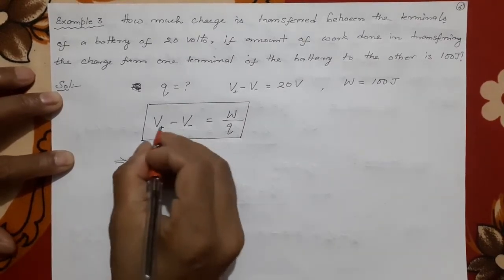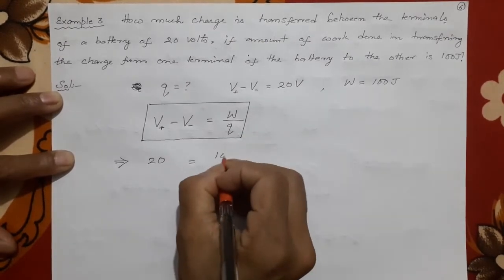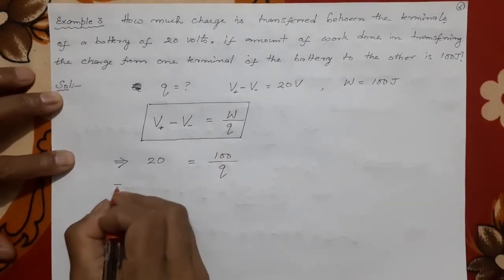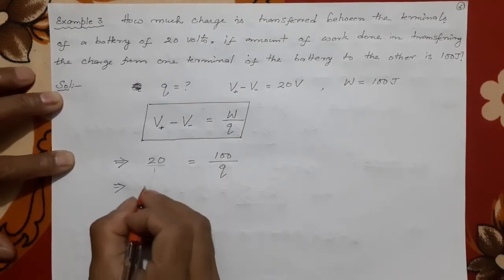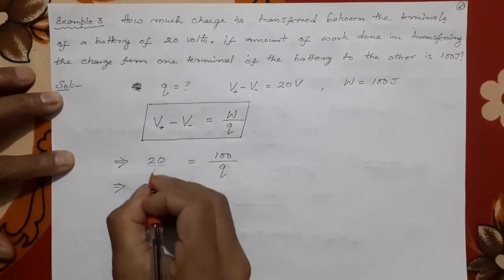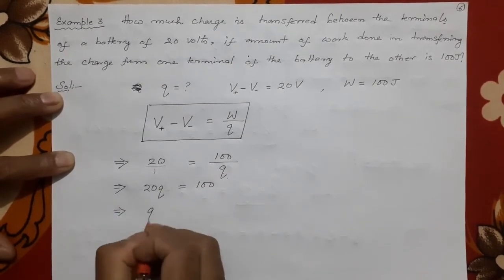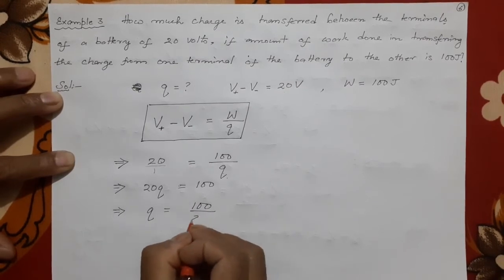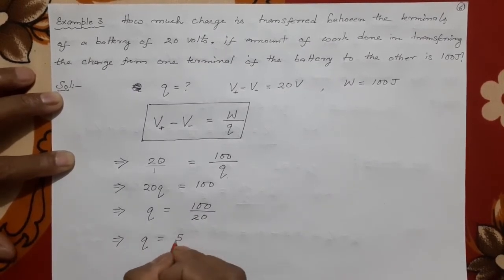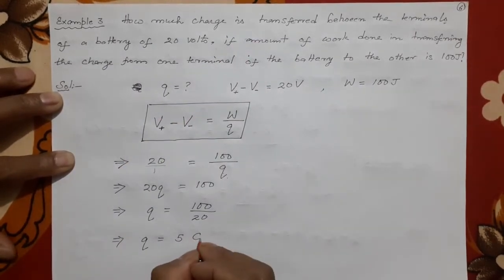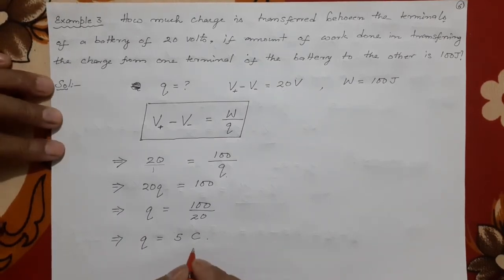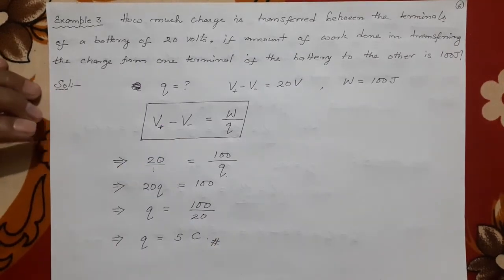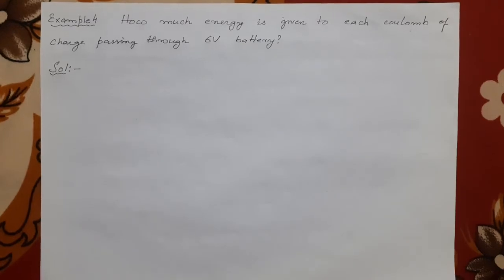Substituting: 20 = 100 / Q. Cross-multiplying: 20 × Q = 100, so Q = 100 / 20 = 5. The unit of charge is coulomb, so the charge transferred is 5 coulomb. Very simple — every time you need to know the formula and just put in the given values.